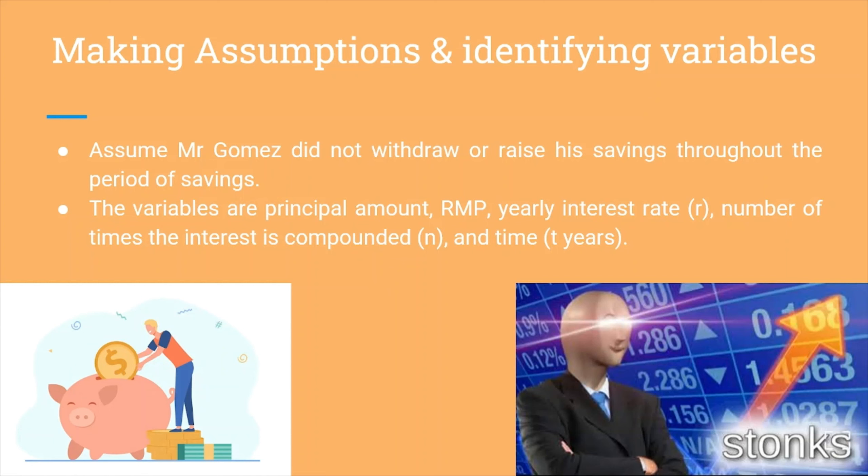Next step, we make assumptions and identify the variables. Let's assume that Mr. Gomez did not withdraw or add to his savings throughout the savings period, so it stays at RM20,000 throughout the year. The variables are the principal amount, we use P. The yearly interest rate as R, number of times that is compounded using the N symbol, and time is T years. Those are the assumptions that are being made.